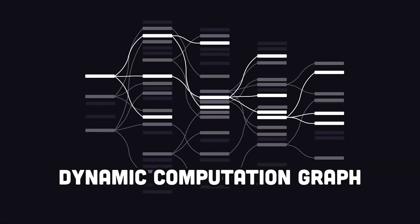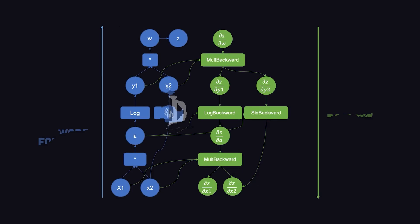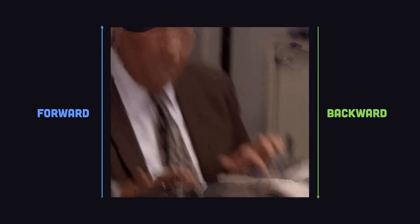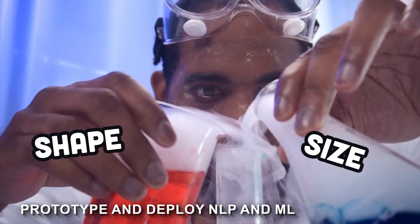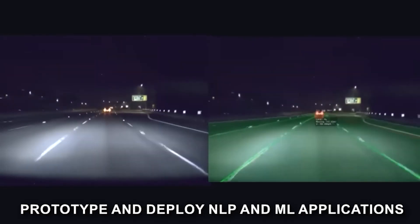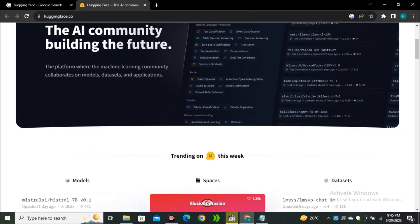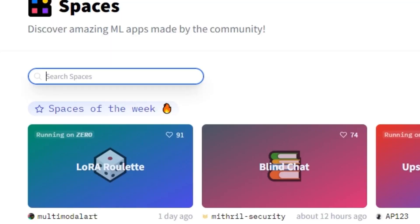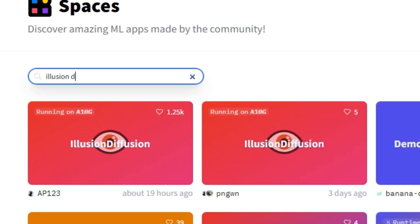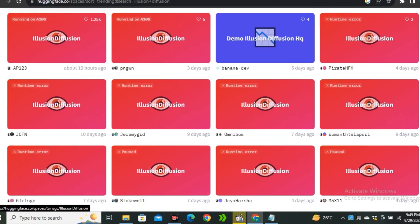Time is of the essence, especially in the fast-paced world of AI and ML. HuggingFace gets that. It empowers you to rapidly prototype and deploy NLP and ML applications. Let's say you have a brilliant idea for a chatbot that could revolutionize customer service. With HuggingFace, you can turn that idea into reality in record time. You don't need to spend months building the foundation. You can start experimenting, fine-tuning, and refining your model almost instantly.